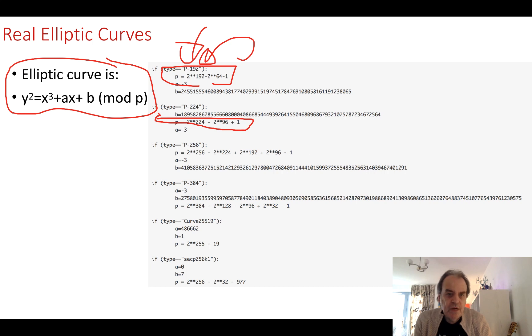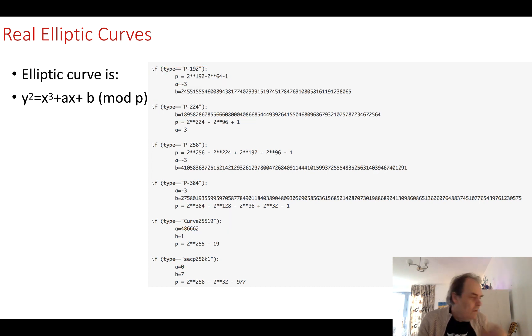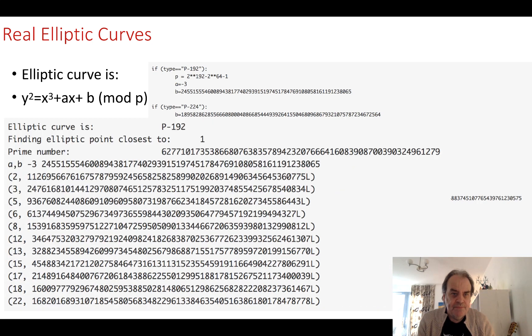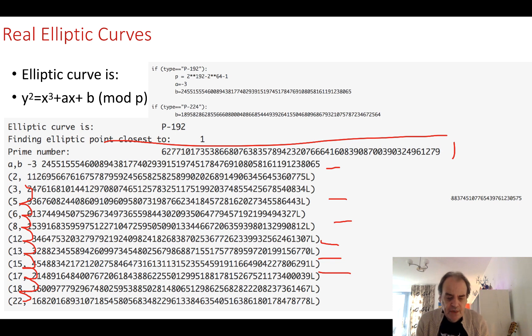Two other typical curves that are used are Curve25519 and secp256k1. These are the values that we actually get. When we run off one curve, here are the parameters we're going to use and here are the points. A good thing is that we get quite a lot of points that we can actually use, which means it's a fairly secure method.